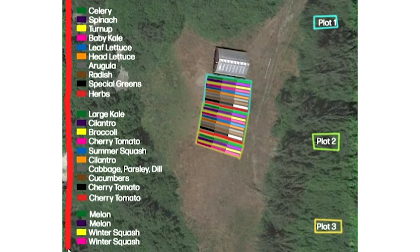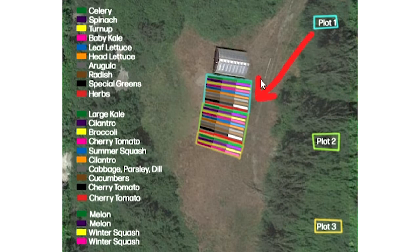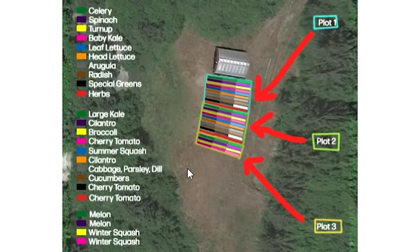What we're looking at is our final garden layout. You can see I've got three plots here, and the reason I divide them up into plots is they're easier to manage. When I'm telling Ashley or someone helping on the farm to go to the celery bed, she might ask where it is — well, it's in plot one, bed A. So you divide it up by plots and then by bed. We've got 24 beds total divided into three plots.